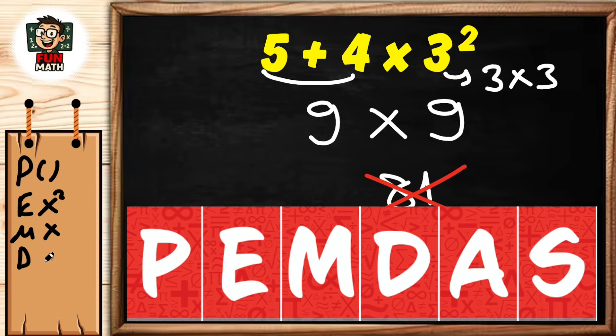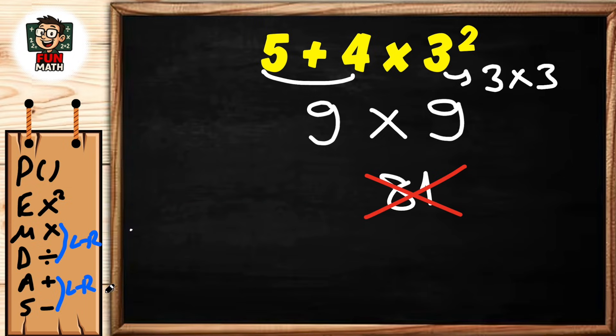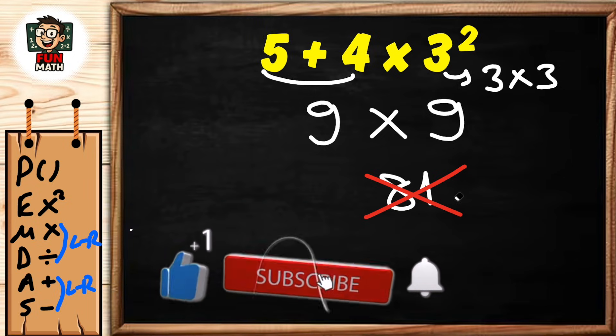We have one more feature here: there is no order for multiplication and division—operations are performed from left to right. Similarly, there is no order for addition and subtraction operations—they are performed from left to right. Now let's apply this rule to our question.